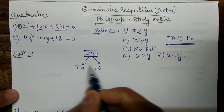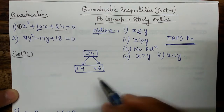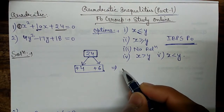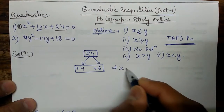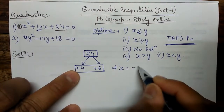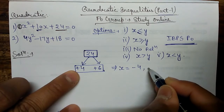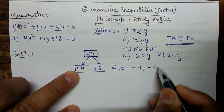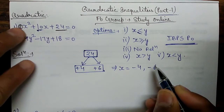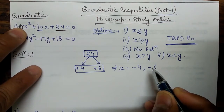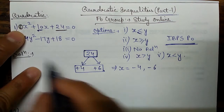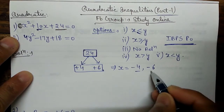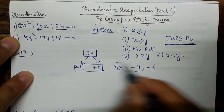Whatever value the factors give, just reverse the sign to find the value of x. So the value of x will be -4 and -6. These should be divided by the coefficient of x², which is 1, so there is no effect. The values are x = -4 and x = -6.